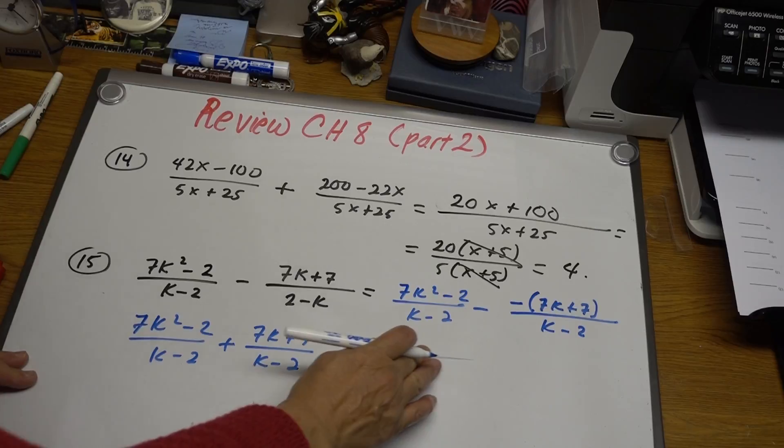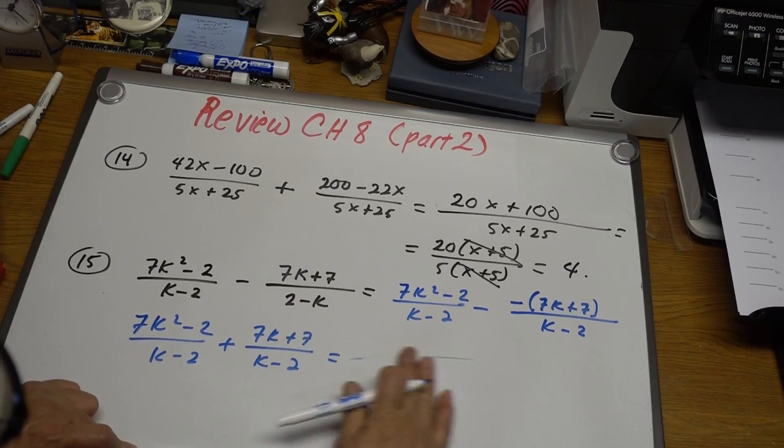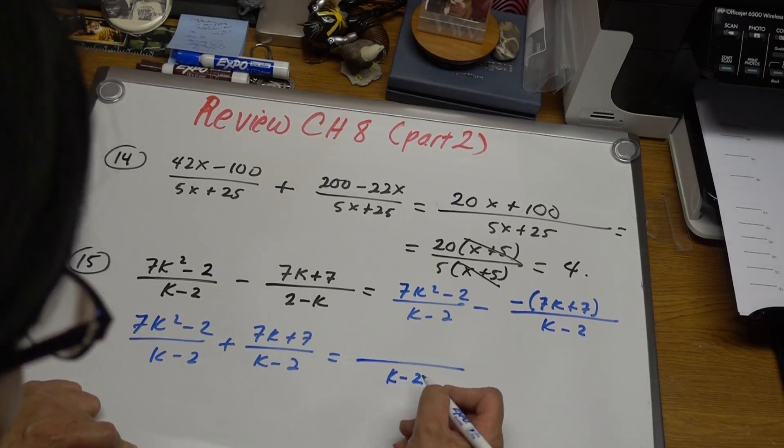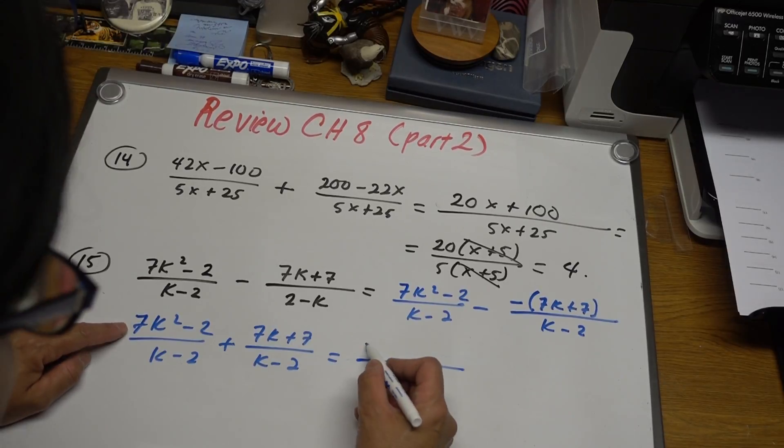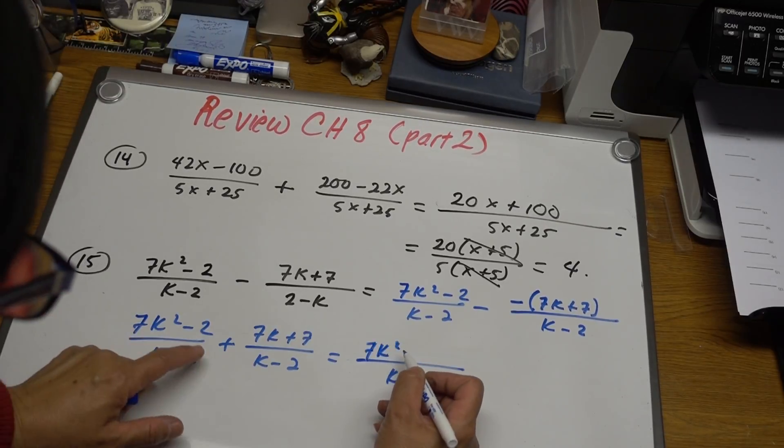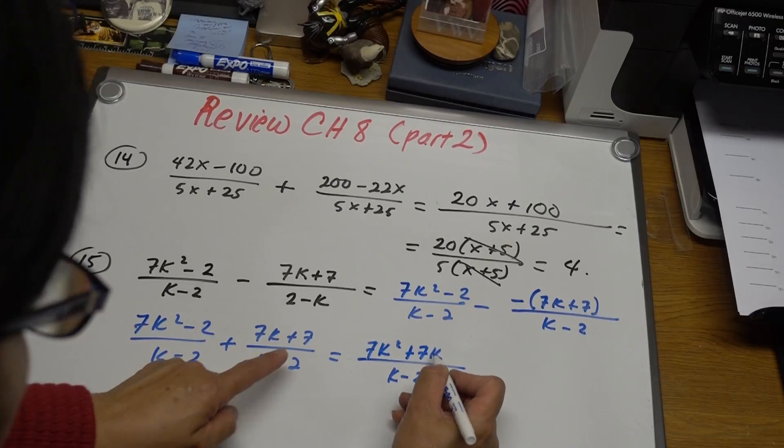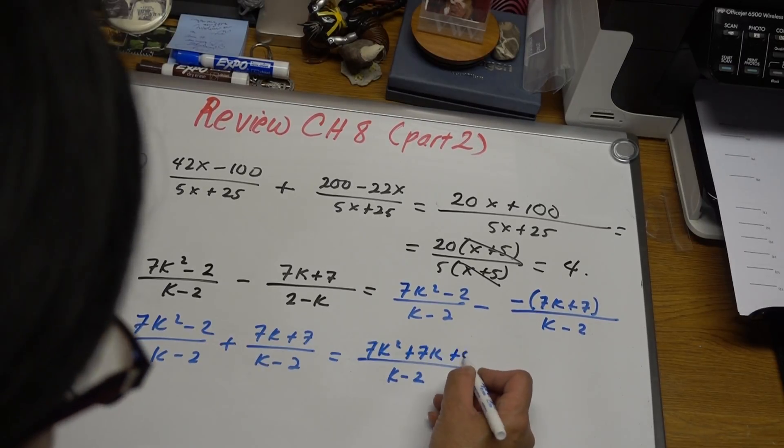k minus 2. And then this is 7k squared plus 7k. Negative 2 plus 7 is positive 5.